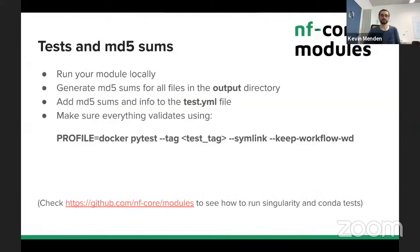Once you have the right test data and written your tests, the next thing you have to do is actually run your tests and see that they run through. From the output, you can generate md5 sums. When you run your tests, this will create an output directory inside your modules directory, and those md5 sums are used to verify that your module always generates the same output. Once you have all your md5 sums, you write them into the test.yaml file. Then you run pytest to see if everything validates, and then you're basically good to go with your module.